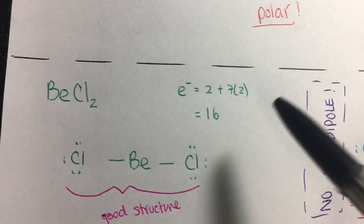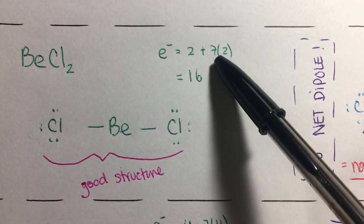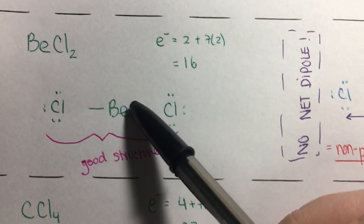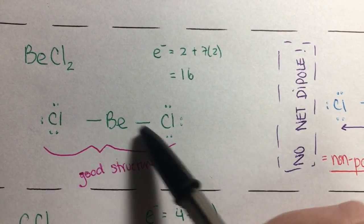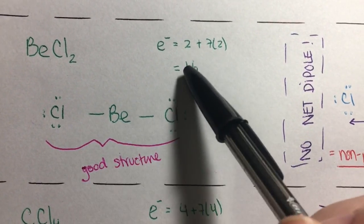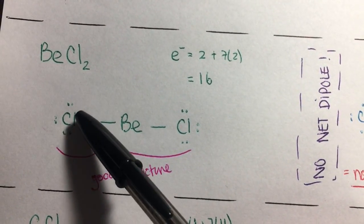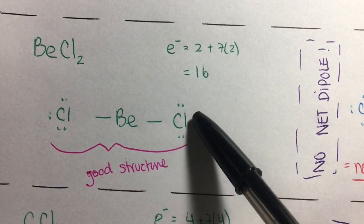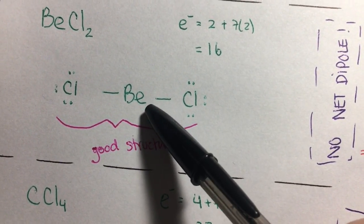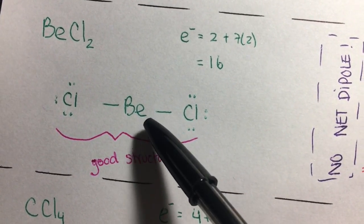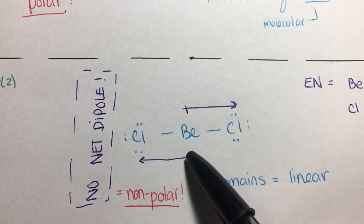We move on to BeCl₂. Beryllium has 2 electrons and chlorine has 7 each, so 2 plus 7 times 2 gives us 16 total. We put beryllium in the middle and bond one chlorine on each side, then subtract 4, leaving 12. We add 6 electrons to each outside chlorine atom, leaving zero electrons remaining. You might wonder why beryllium doesn't have an octet — it's because beryllium is one of the exceptions and does not require an octet. So this is a good structure.